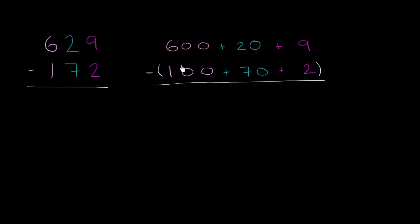I've written the same subtraction problem twice. Here we're subtracting 172 from 629. All I did here is I expanded out the numbers. I wrote 629 as 600 plus 20 plus 9.